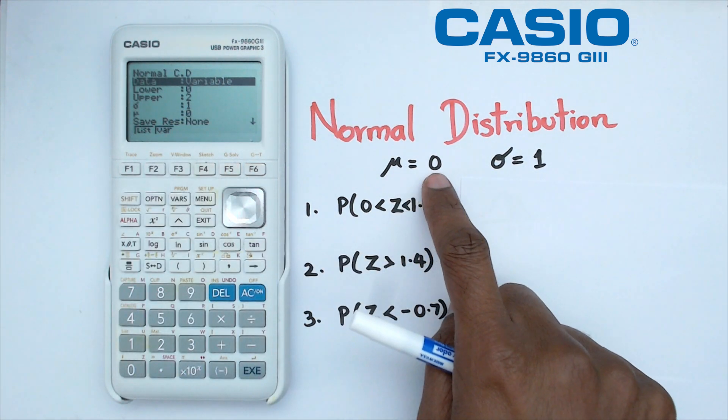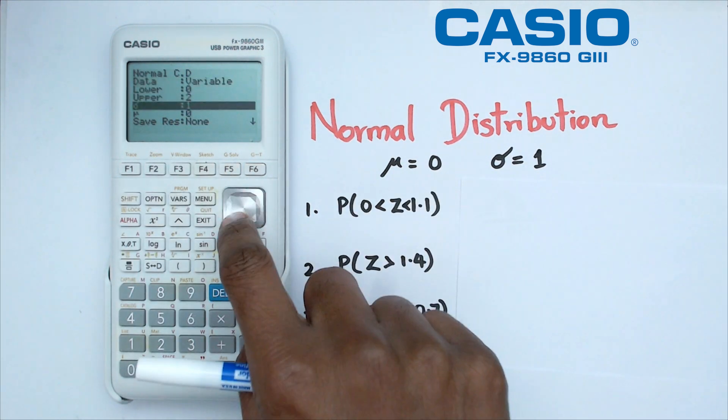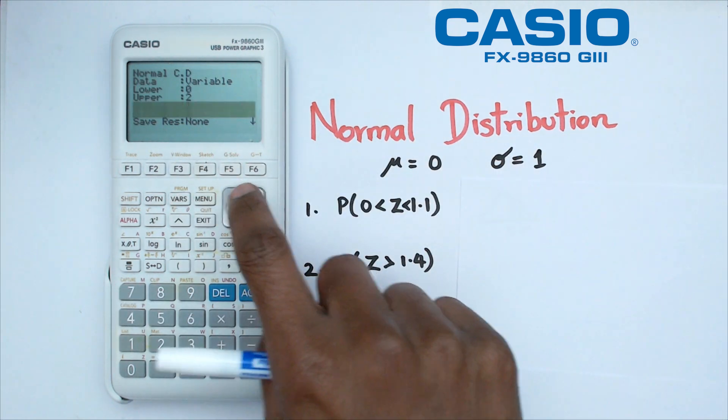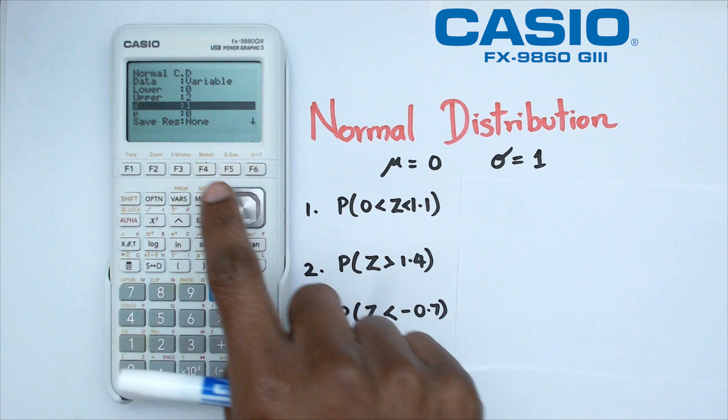Now because we're using mean of zero, the mean is already set up to zero and the standard deviation here is one. So in the calculator it's already set up as one.